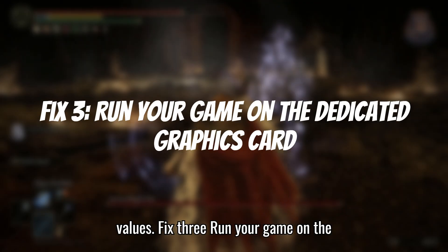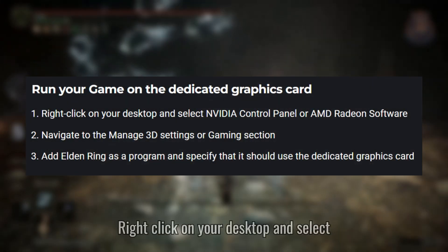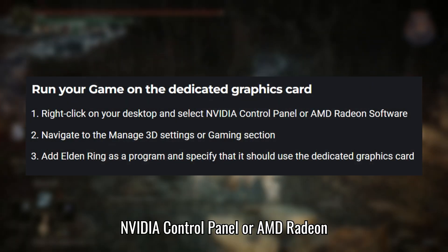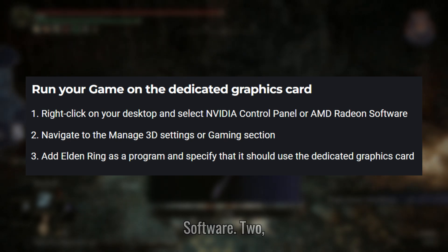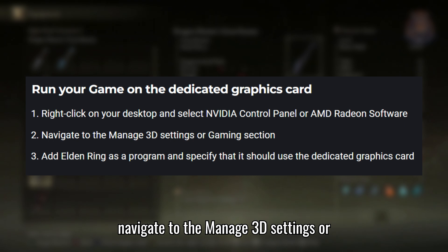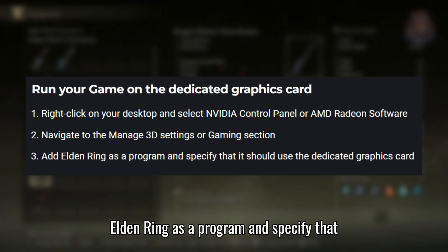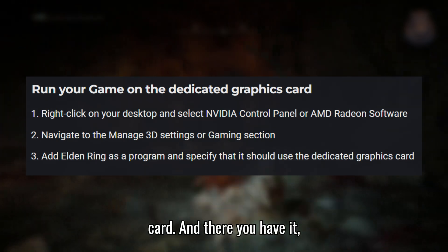Fix 3: Run your game on the dedicated graphics card. 1. Right-click on your desktop and select NVIDIA Control Panel or AMD Radeon Software. 2. Navigate to the Manage 3D Settings or Gaming section. 3. Add Elden Ring as a program and specify that it should use the dedicated graphics card.